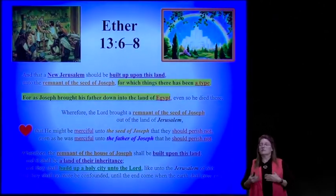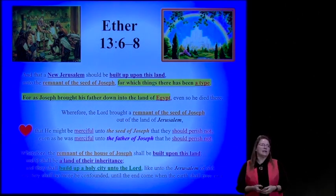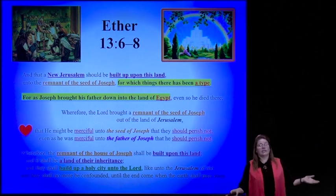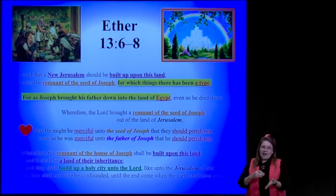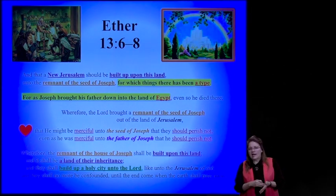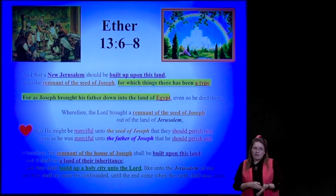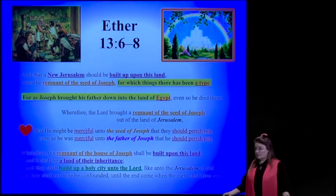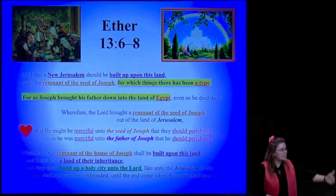That will be very helpful in understanding these types, symbols, and Hebrew literary techniques that Isaiah uses throughout the book. But if you want to know who Egypt is, it's nailed down completely in the Book of Mormon in Ether chapter 13, verses 6 through 8: 'And that a nation should be built upon this land'—North America and the Americas—'A new Jerusalem will be built upon this land unto the remnant of the seed of Joseph, for which things there has been a type.'